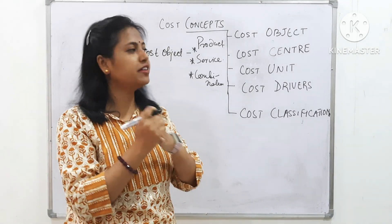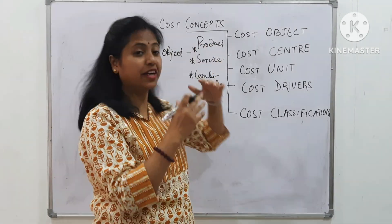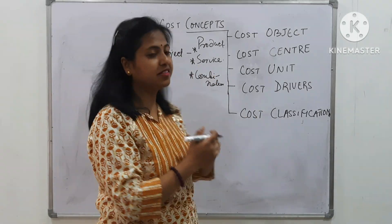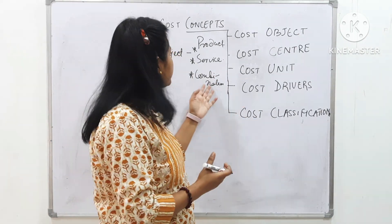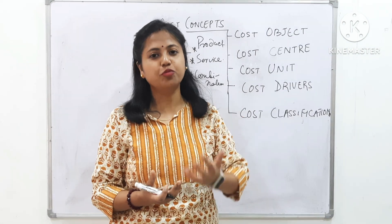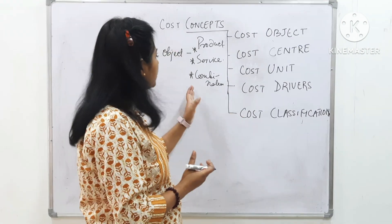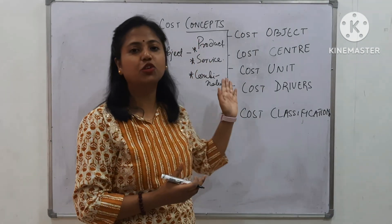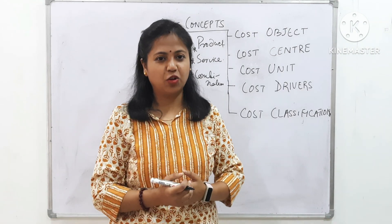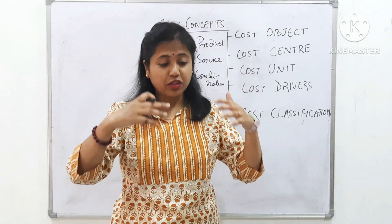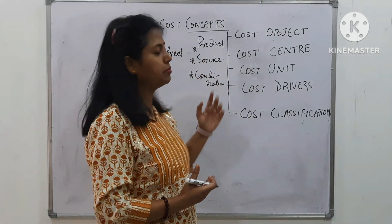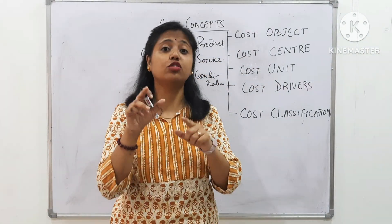If it is a producing organization, then the product is the cost object. If it is a service organization, then the service is the cost object. Or sometimes an organization both produces products and delivers services, so it can be a combination of both. The cost is incurred on product, service, or a combination — that is a cost object.